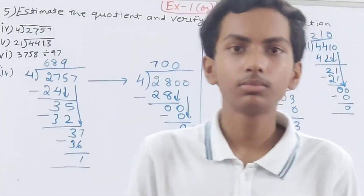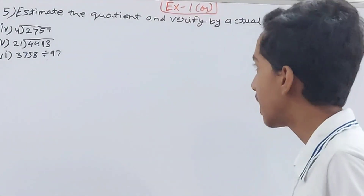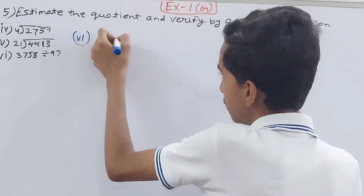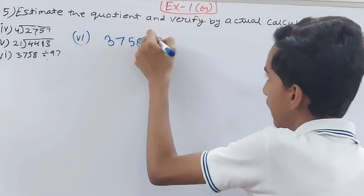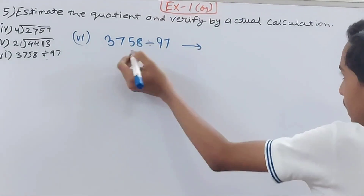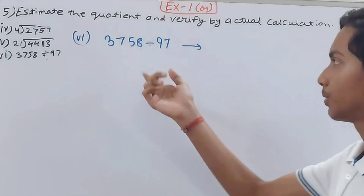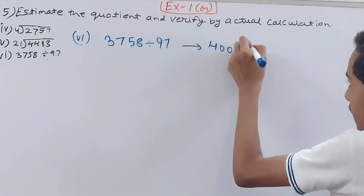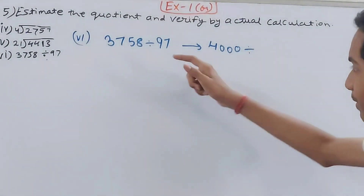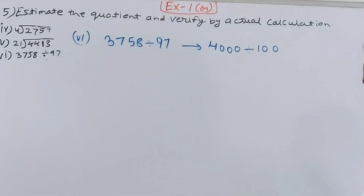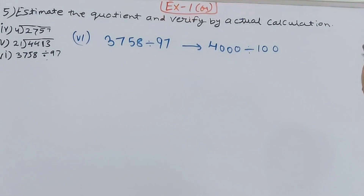Sixth part: 3758 ÷ 97. Round 3758 to the nearest thousands giving 4000, and round 97 to the nearest hundreds giving 100. So estimated is 4000 ÷ 100.